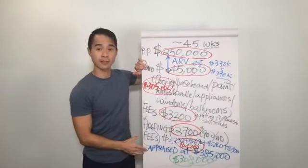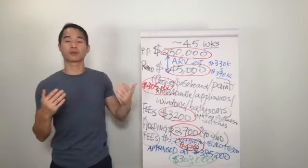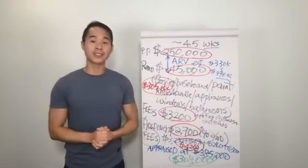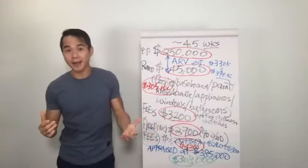This is the BRRRR process - as you can see, we buy, renovate, rent it out, then we get to refinance, and then we get to repeat the process again once you take that money out.